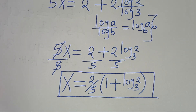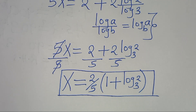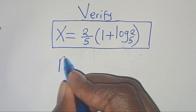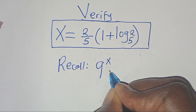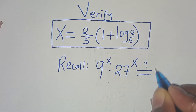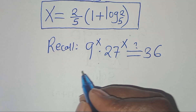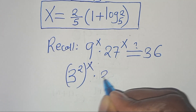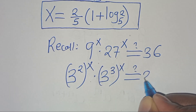The next step is to verify that this value of x satisfies the equation. Recall we have 9 to the power of x times 27 to the power of x, which should give us 36. We can express 9 as 3 squared raised to the power of x, multiplied by 3 cubed raised to the power of x, and this should equal 36.